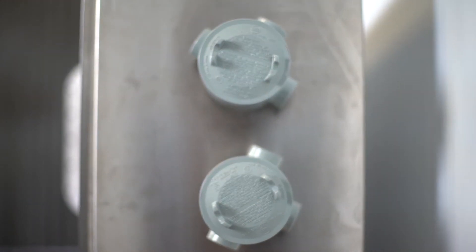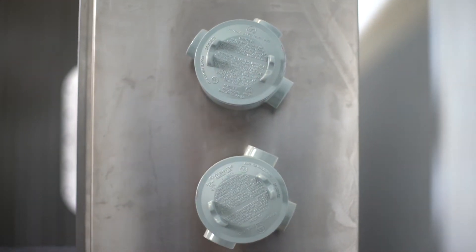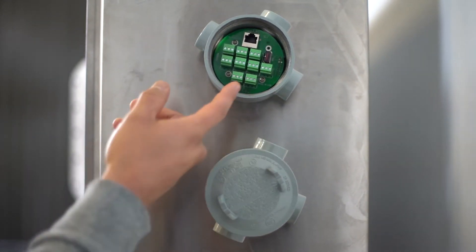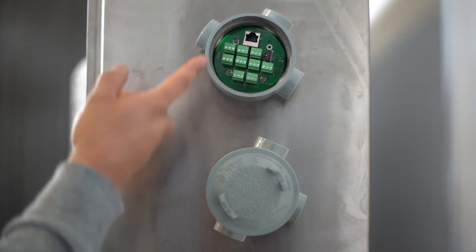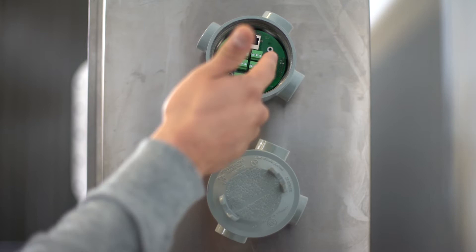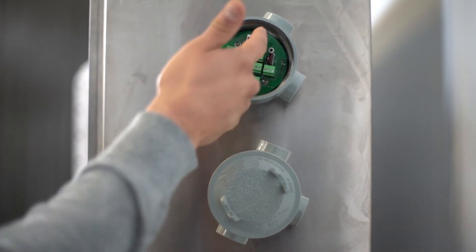As I mentioned before, power and communications have been brought outside to these external enclosures. Here we have our RS-232 and 485, our four analog AOs, and our three relays, as well as the USB and ethernet connections.